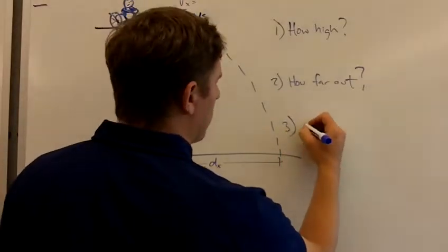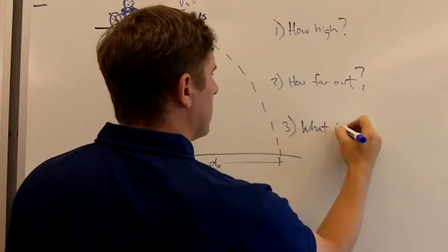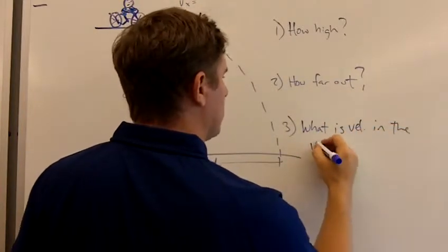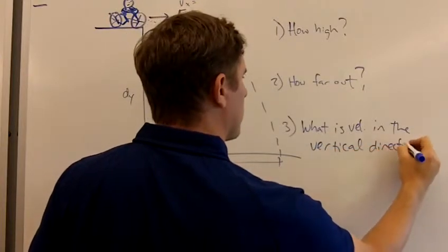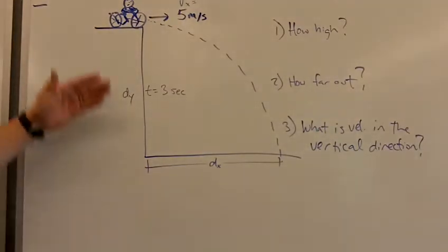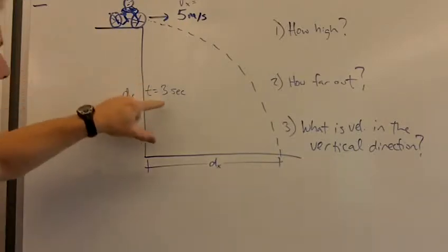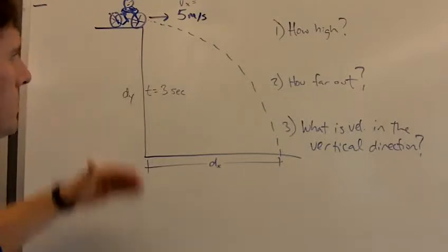No, it's actually what is his velocity going to be in the vertical direction. What's the velocity in the vertical direction? So three questions. First we'll tackle how high is the cliff. Well, we know that he's in the air for 3 seconds.